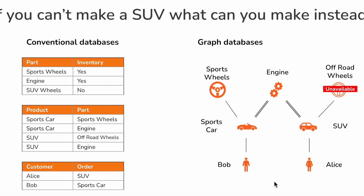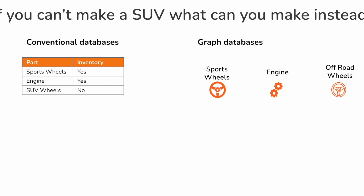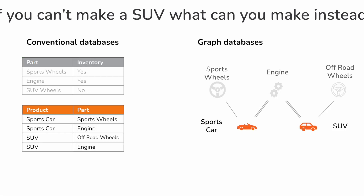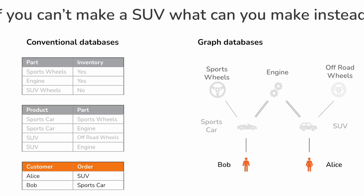Here's a little story about why, if you're a manufacturer, you need a graph database. Have a look at the diagram on the right — it's a production system for building cars. At the top you can see car parts, including two different kinds of wheels, and in the center the engine, which I'm using as a shorthand for all the other parts required to build the car. Below that, your factory builds two different models: sports cars and SUVs. And below that, you can see two orders — one from Bob who wants to buy a sports car, and one from Alice who wants to buy an SUV.